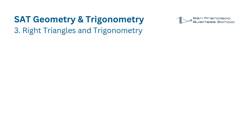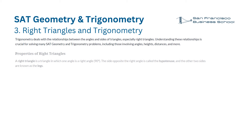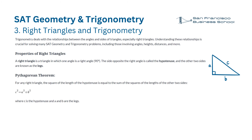Right triangles and trigonometry. Trigonometry deals with the relationships between the angles and sides of triangles, especially right triangles. A right triangle has one angle of 90 degrees; the side opposite the right angle is called the hypotenuse, and the other two sides are the legs. Pythagorean theorem: c squared equals a squared plus b squared, where c is the hypotenuse and a and b are the legs. Special right triangles: 30-60-90 (sides ratio 1, √3, 2) and 45-45-90 (sides ratio 1, 1, √2).